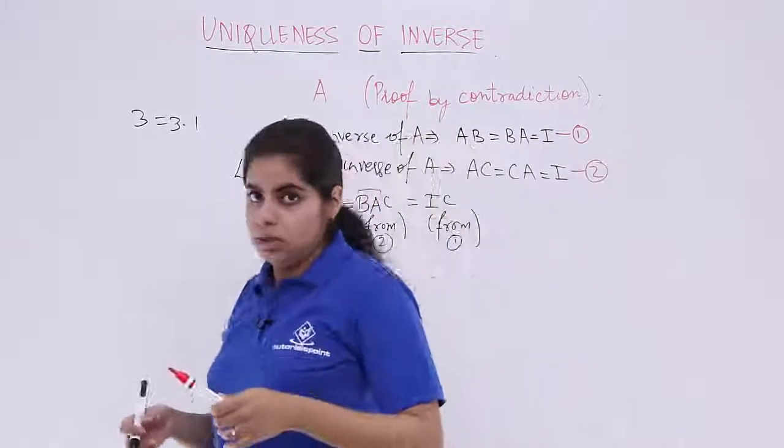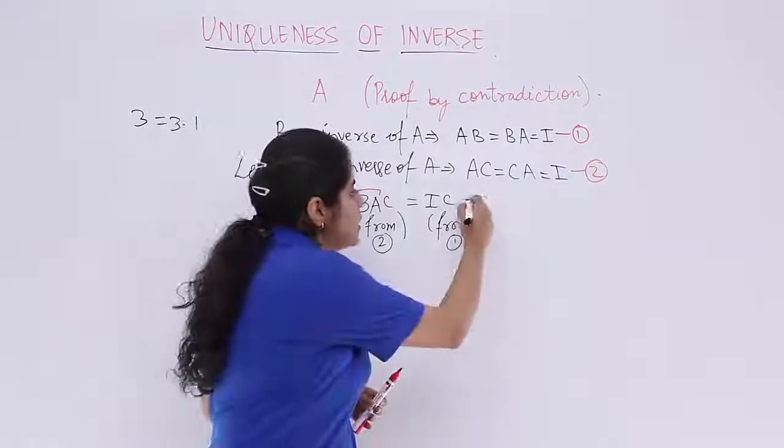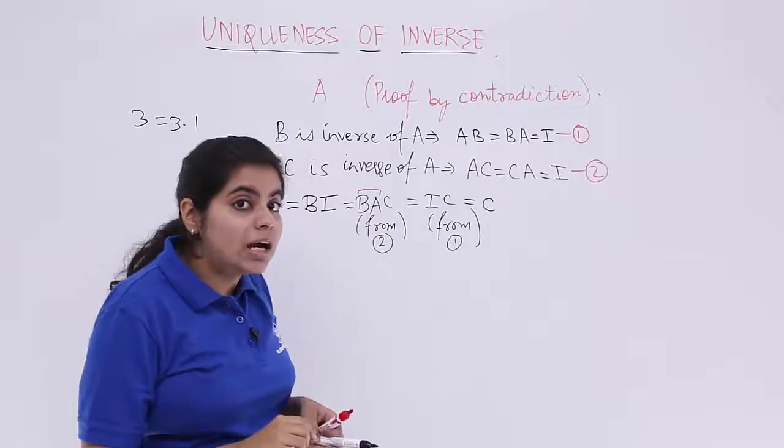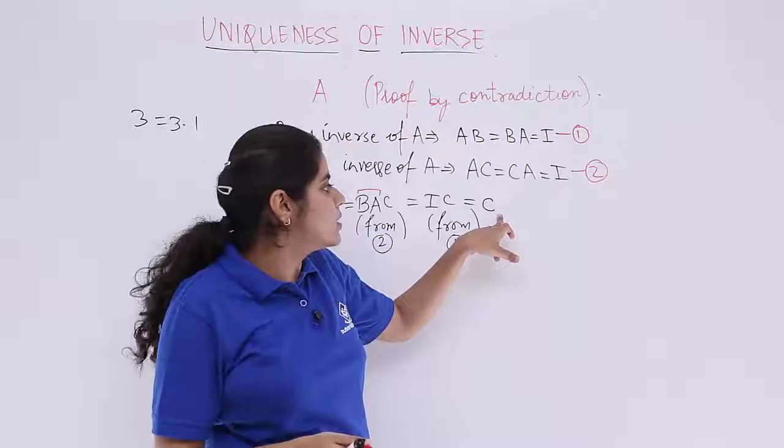Now I into C, that means identity into a matrix is the matrix itself, so it is C only. So you started with what? You started with B. You got what? You got C.